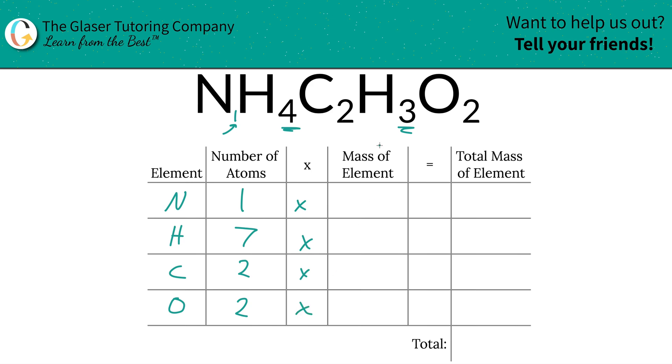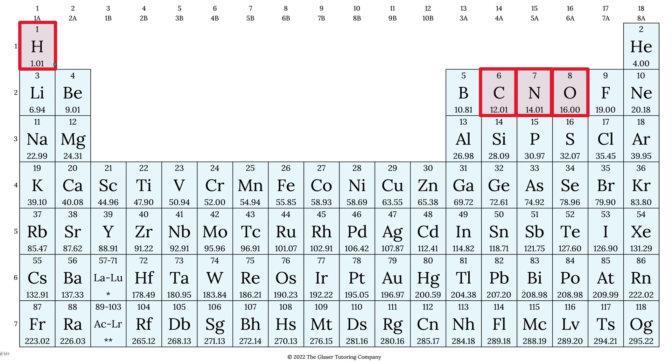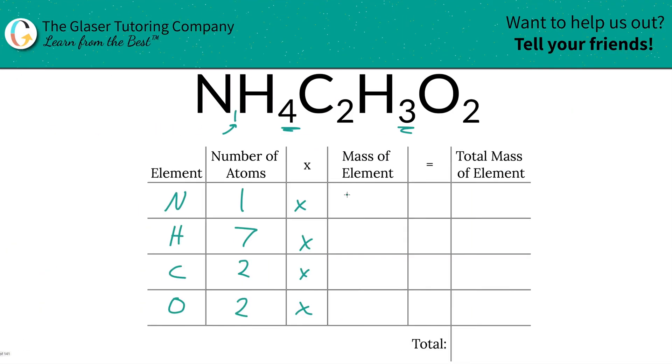We're going to take those number of atoms then multiply it by the mass of each element - that's where the periodic table comes into play. So we've highlighted all the elements: hydrogen is 1.01, carbon is 12.01, nitrogen is 14.01, and oxygen is 16. So those are the masses that we're going to write down.